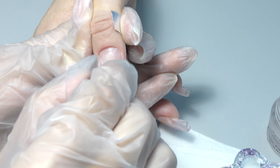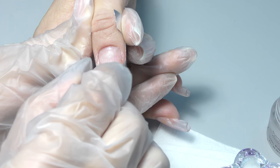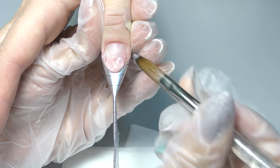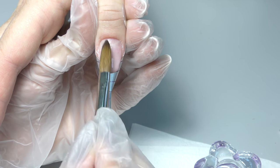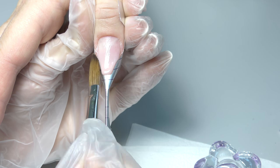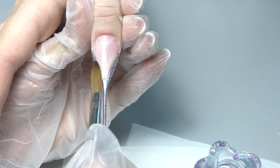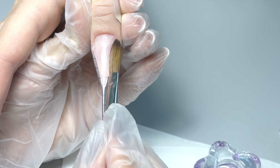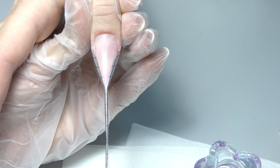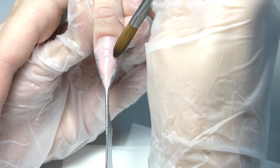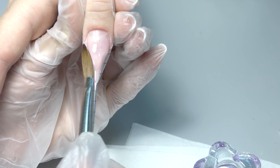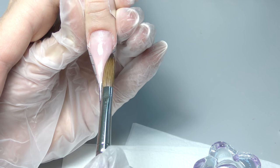Then I apply dehydrator and non-acid primer and start my application. I'm using NSI Attraction Rose Blush powder and for this shape I think the best solution is to create a nail bed which is pointed like in a triangle shape because spider webs usually have sharp corners and it will just make this shape look better.